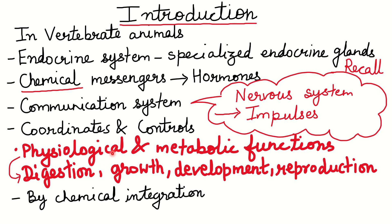Physiological functions are the functional activities that hormones control and coordinate — such as digestion, growth, development, and reproduction. All of this is done by chemical integration: the chemicals produced and used in the cell integrate within the animal body. This also helps maintain homeostasis, which is a steady state.